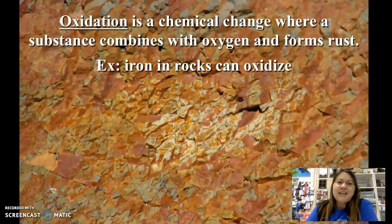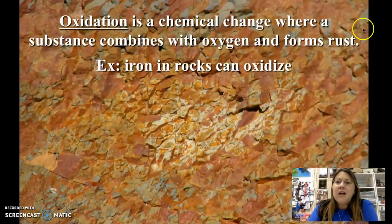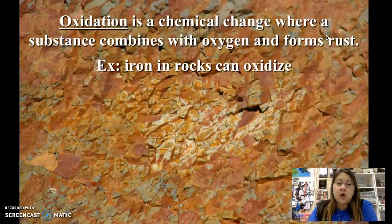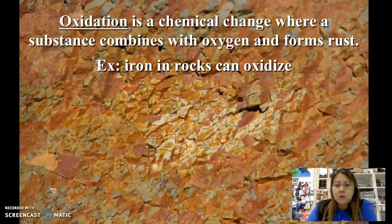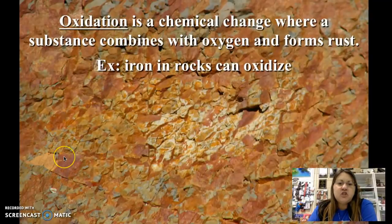Oxidation — a term from chemistry — refers to chemical changes specifically involving rust. When you see or hear the word oxidation, think rust. In rocks, this occurs where iron in the rock combines with oxygen in the air, causing it to oxidize and appear to rust. This large red rock layer is oxidation of the shale material.